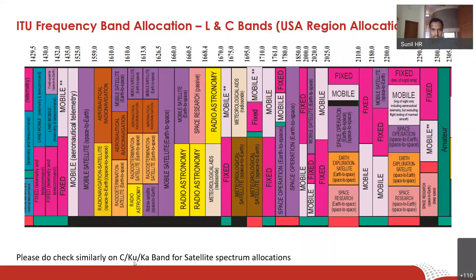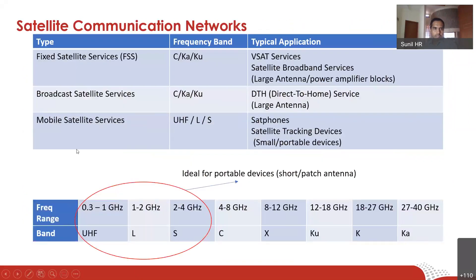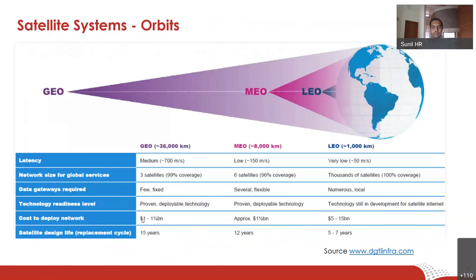Satellite users operating in C band have been asked to vacate and make way for mobile communications. KU and KA are other segments typically used for broadcast-based or broadband-based services. One advantage of going to higher frequencies is getting larger bandwidths, which means larger data rates. L and S bands support Mobile Satellite Services using small device form factors, but bandwidth is a huge challenge — devices in this segment end up paying more money for bandwidth.